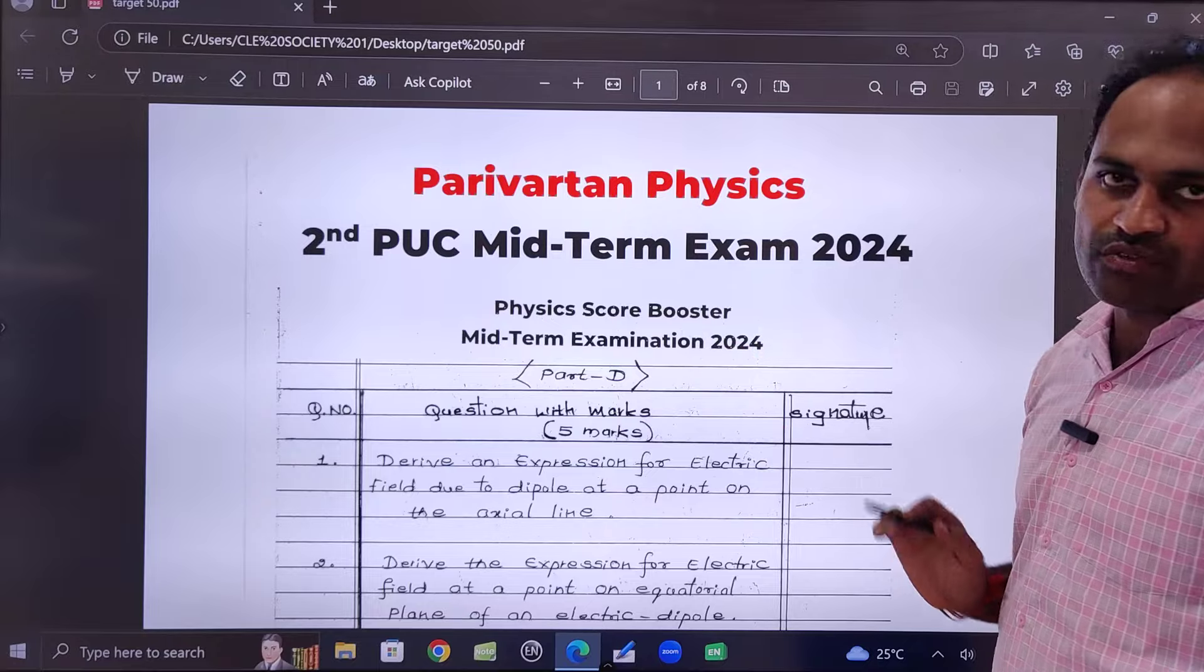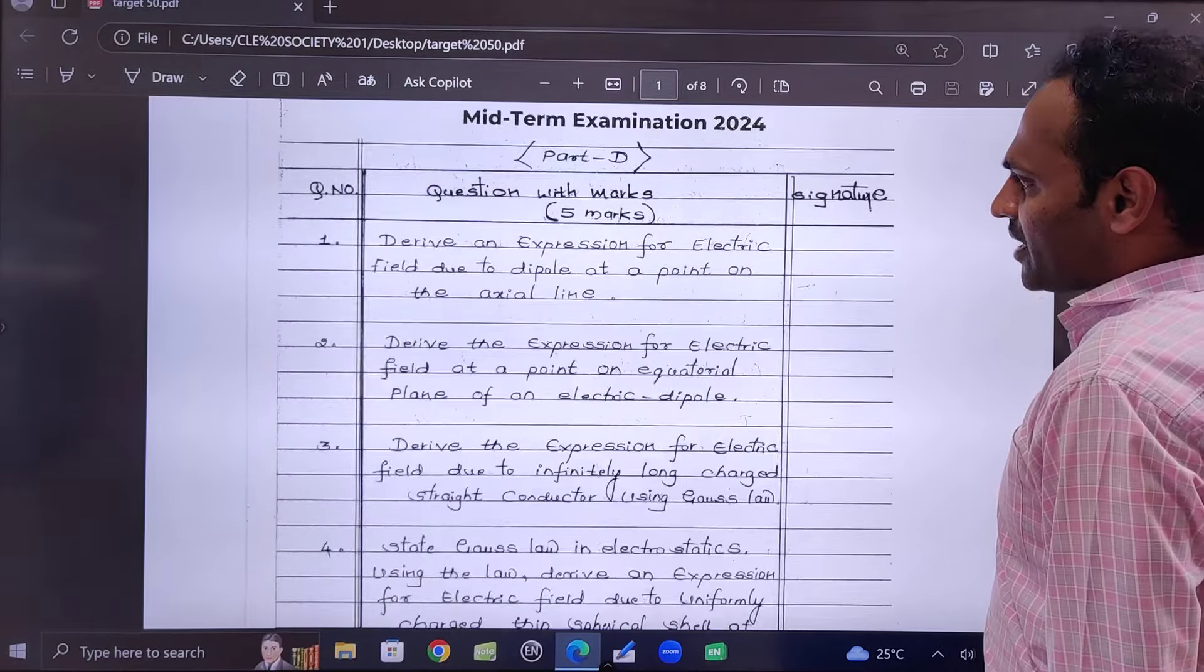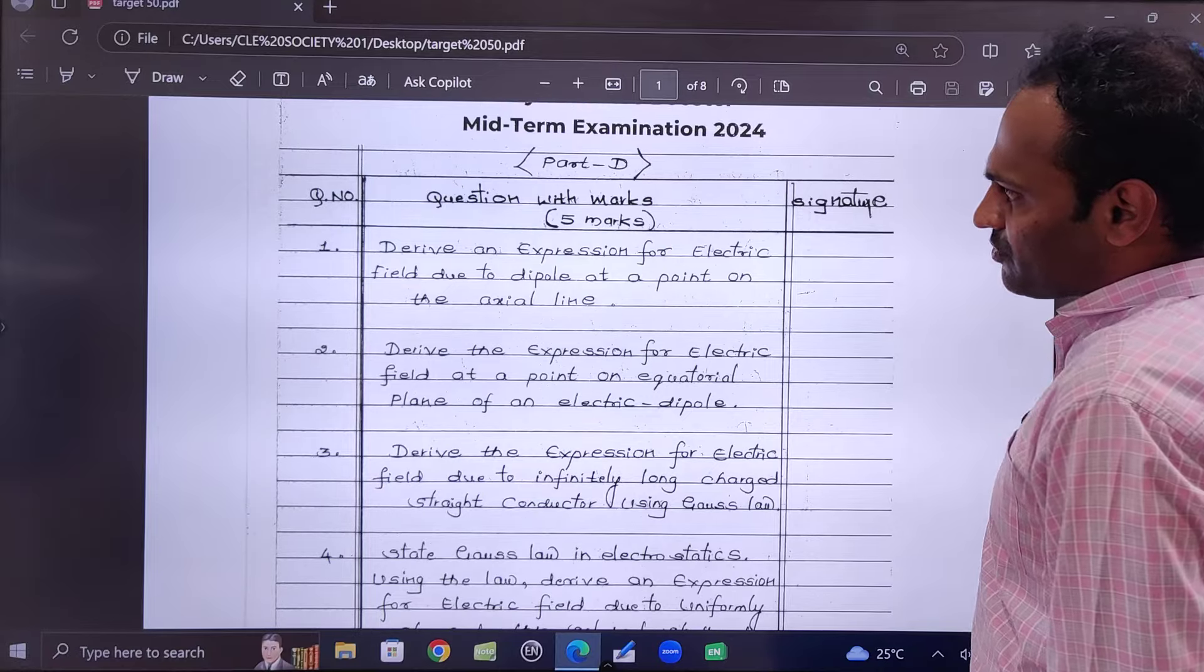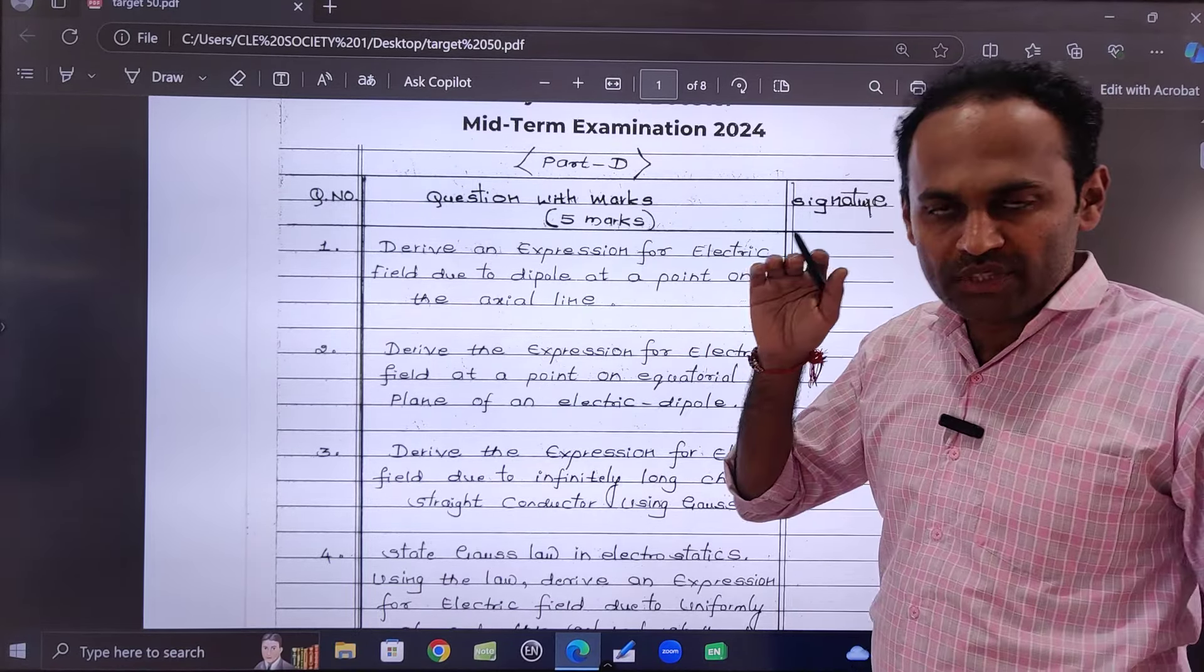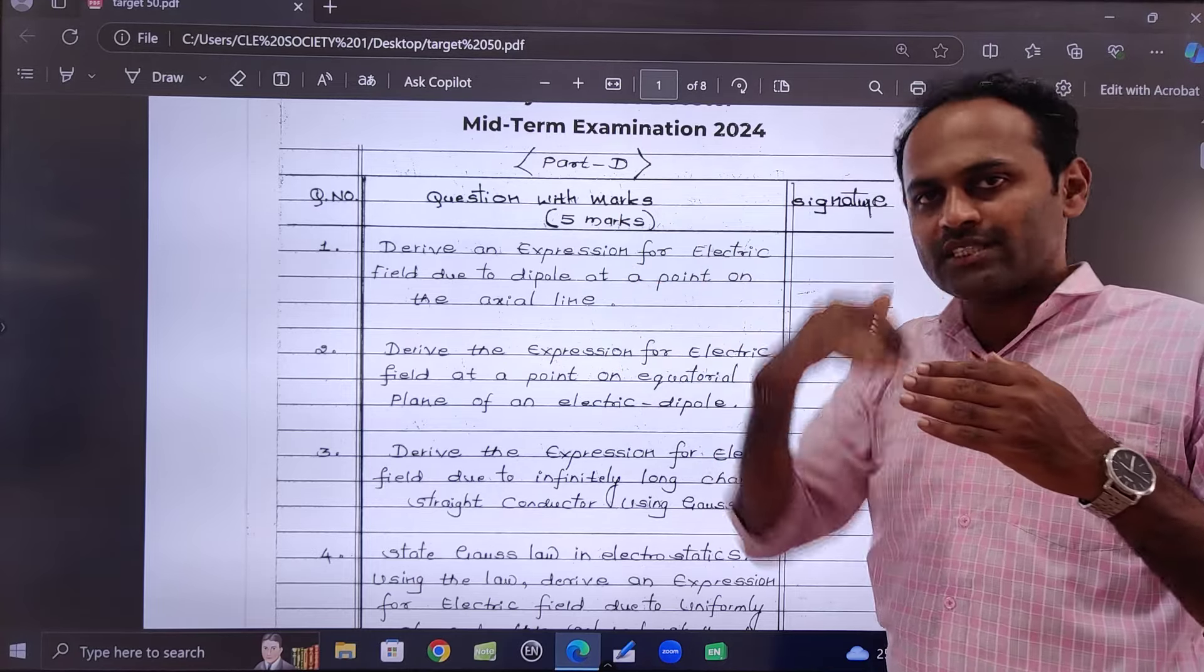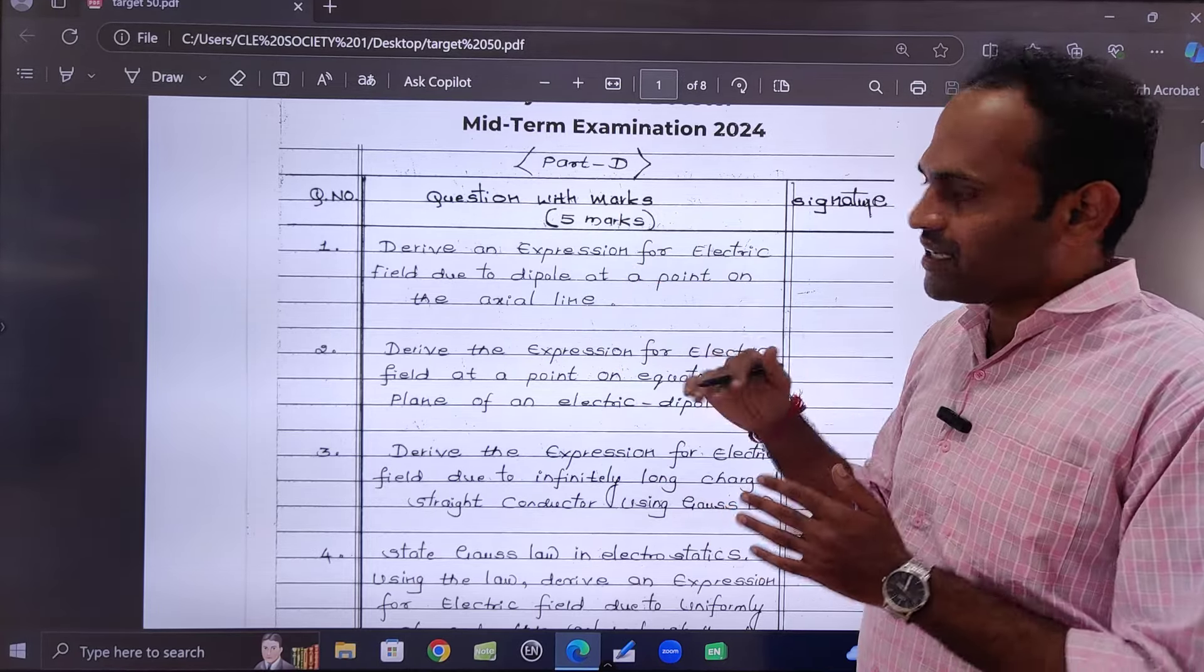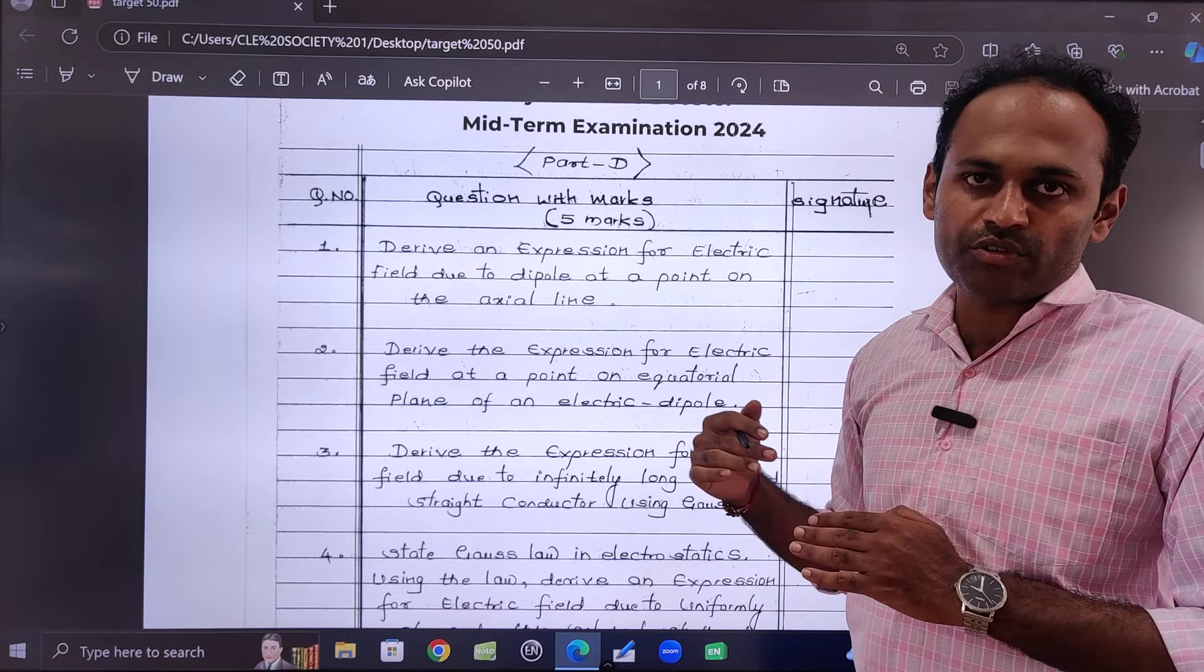First I have organized the five mark questions. There are five mark questions in Part D from chapter number one to chapter number eight. First the five marks questions, then Part C with three marks questions, then Part B with two marks questions.